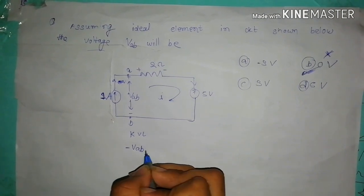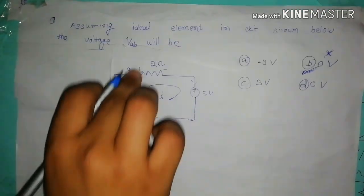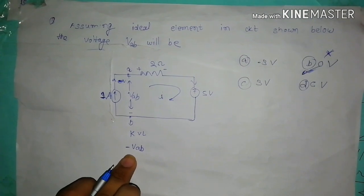VAV. Current is going negative to positive. That's why I take the voltage as negative.